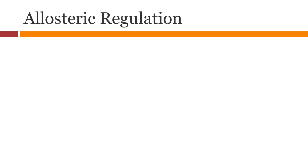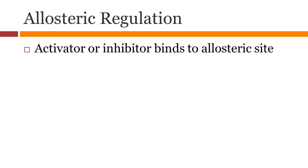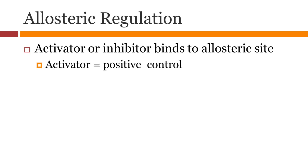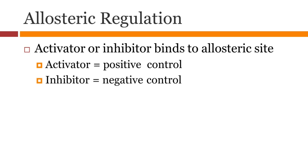Let's have a quick review about allosteric regulation. Activators or inhibitors bind to a site which is different than the active site — they bind to the allosteric site, which leads to a change in conformation of the active site. An activator is positive control whereas an inhibitor is negative control. Allosteric regulation is a reversible process.